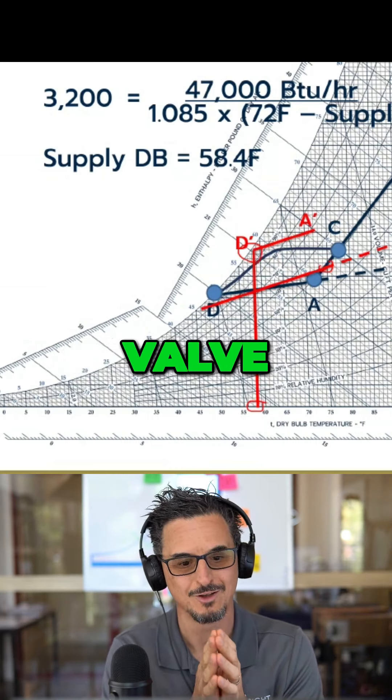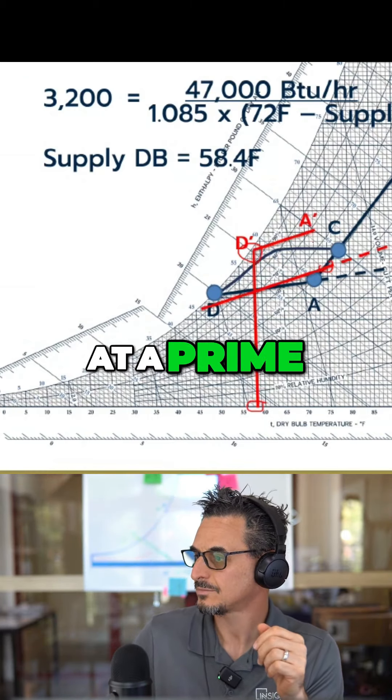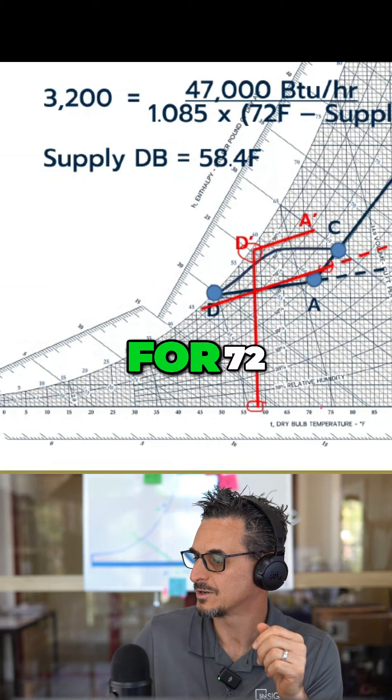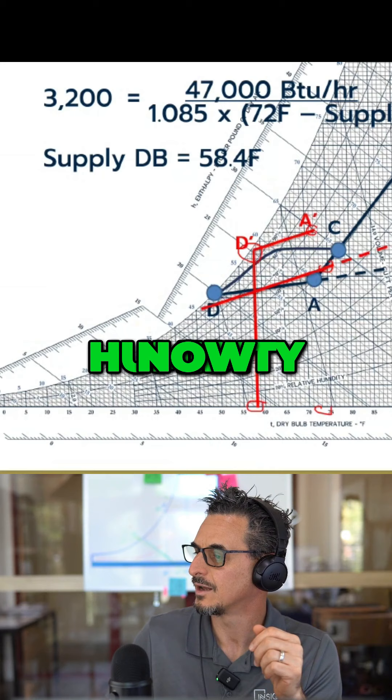Constant volume systems, modulating chilled water valve, not really fully understanding what happens at part load. So you see it, what's the problem at A prime? Well, we're okay with our space temperature, we're 72 degrees, but look at our relative humidity. Now it says 70% RH, which is at about 60 dew point.